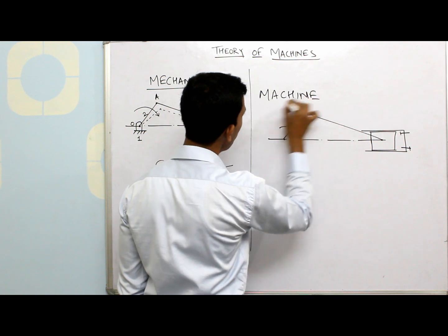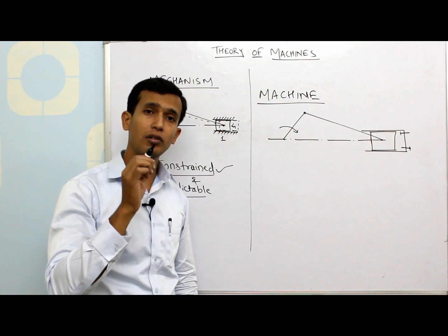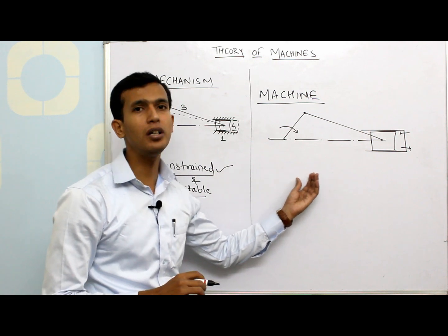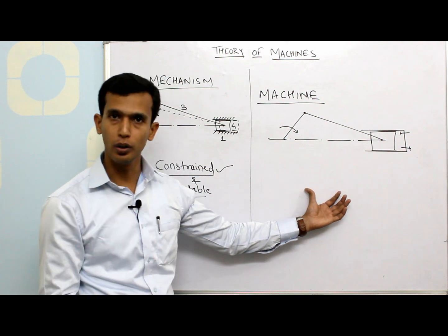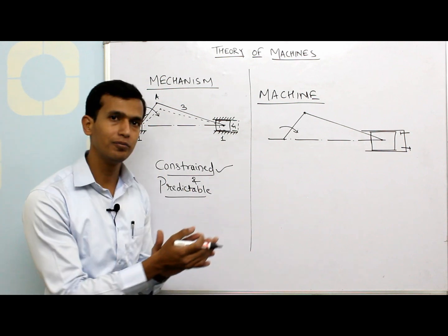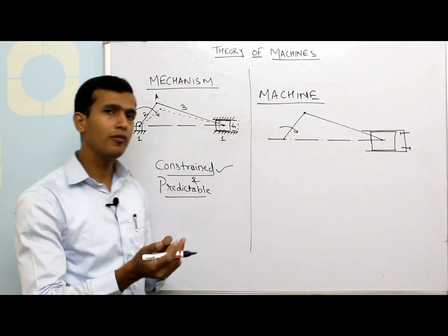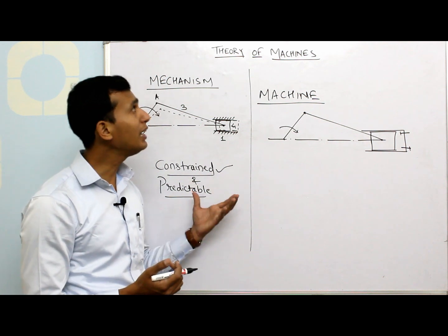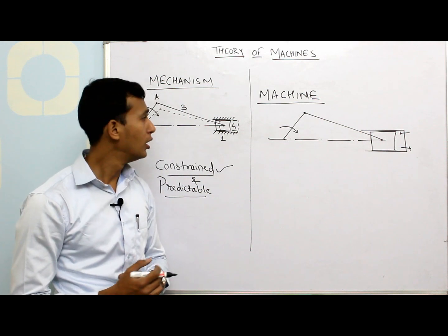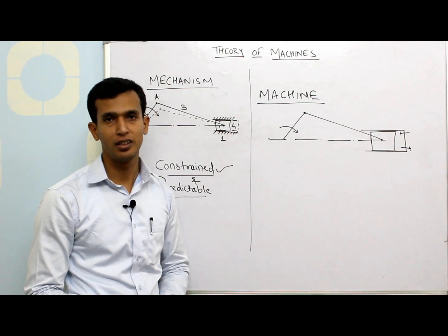A machine is a single mechanism or combination of mechanisms such that it converts the given input energy into desired work. For an engine, the fuel is supplied, burned, and that energy is converted into mechanical work. This is the difference between a mechanism and a machine. In the coming videos we'll discuss the remaining basic terms required for further study of various topics in Theory of Machines. Hope you enjoyed this video — please like and subscribe to our channel. Thank you for watching.